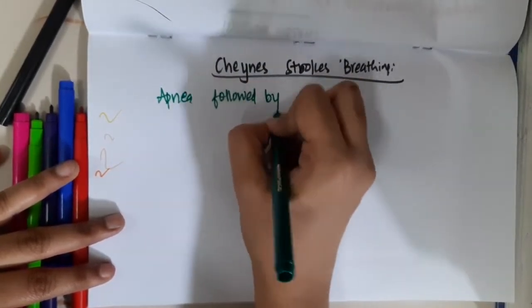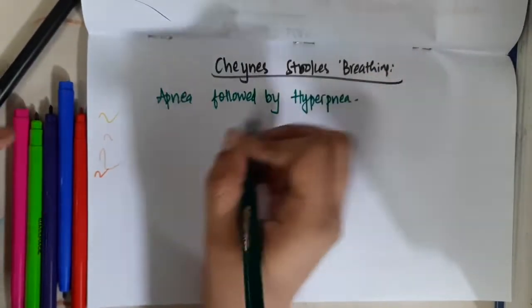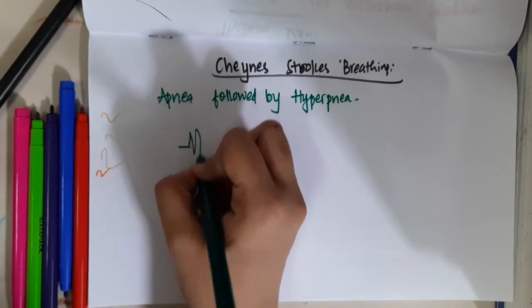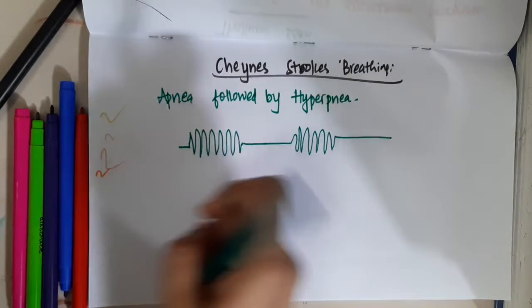There is apnea followed by hyperpnea seen in Cheyne-Stokes breathing. That is, there is hyperpnea followed by apnea. Hyperpnea followed by apnea.